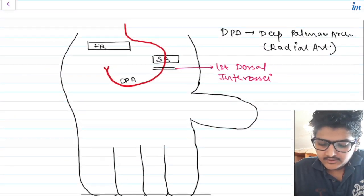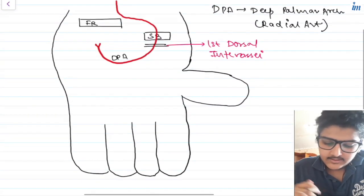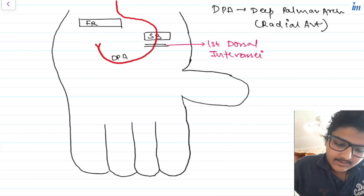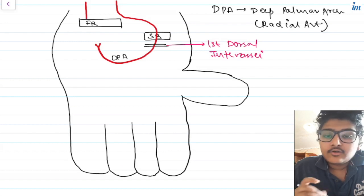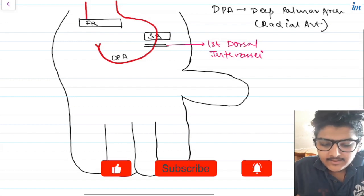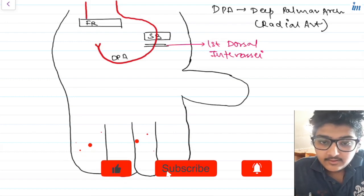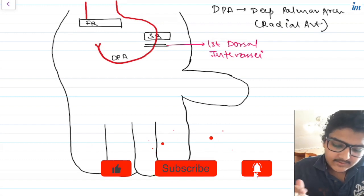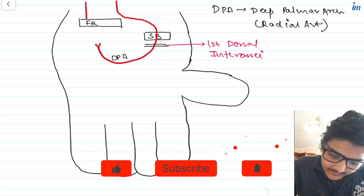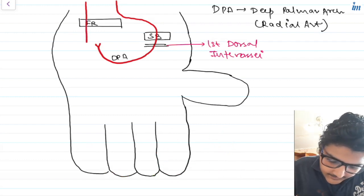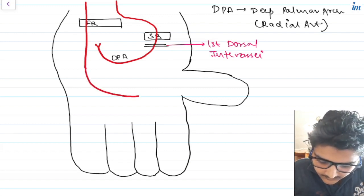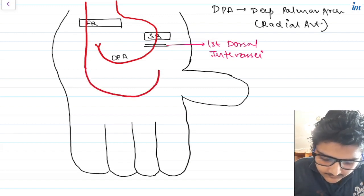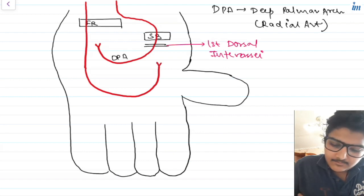For that we have a superficial palmar arch. The superficial palmar arch is formed by the ulnar artery. The ulnar artery will cross your flexor retinaculum — the radial artery was not crossing the flexor retinaculum, it was crossing the snuff box instead — but the ulnar artery will cross the flexor retinaculum and form the superficial palmar arch.